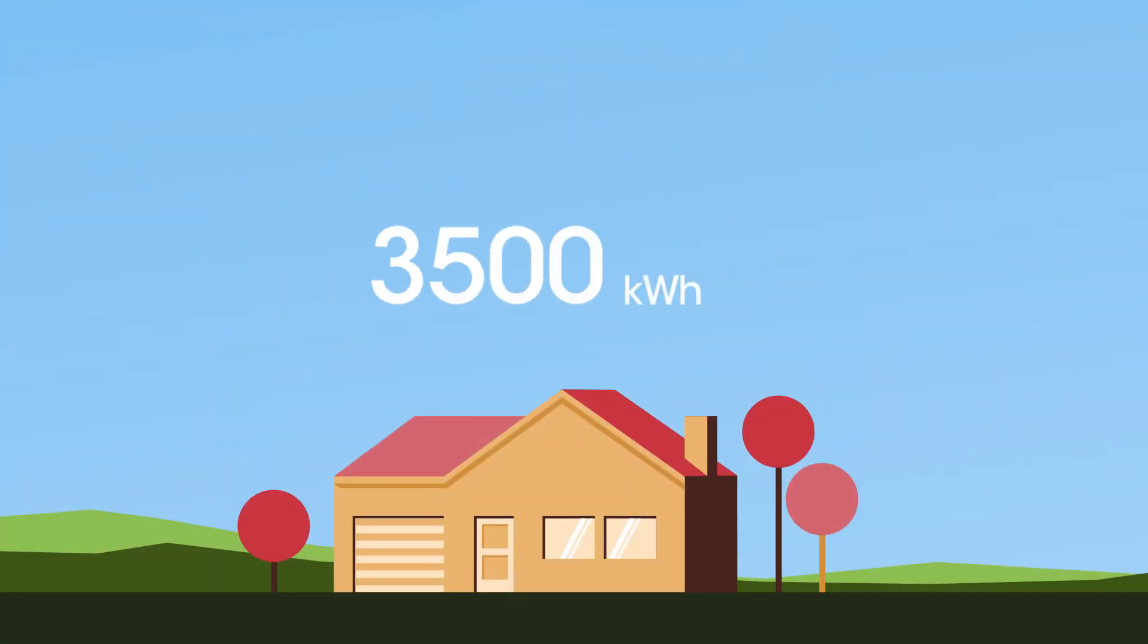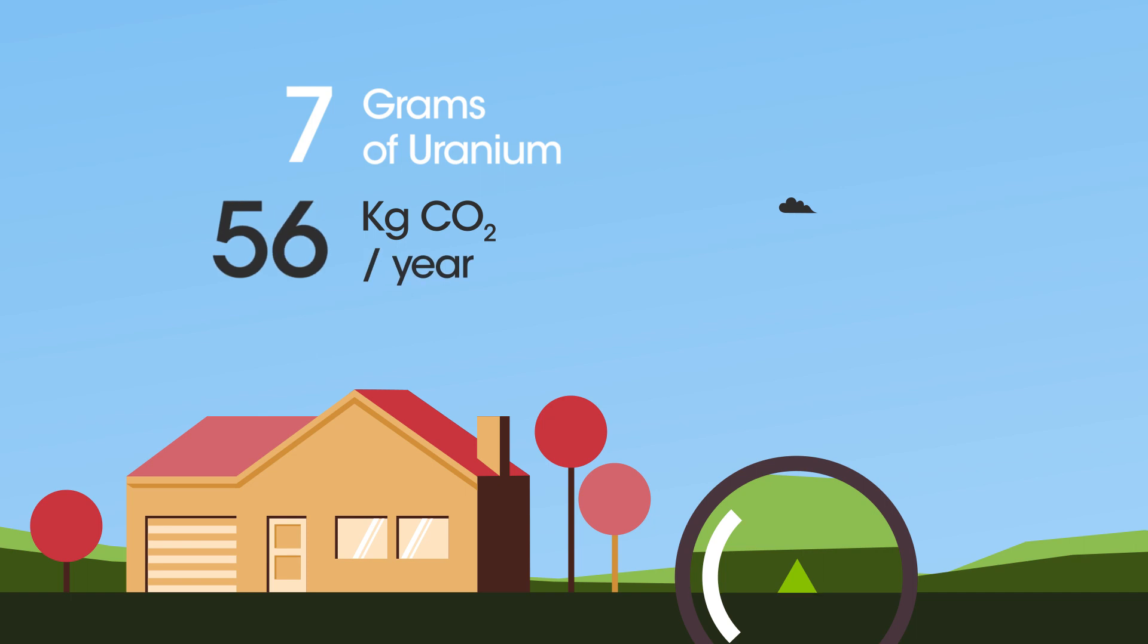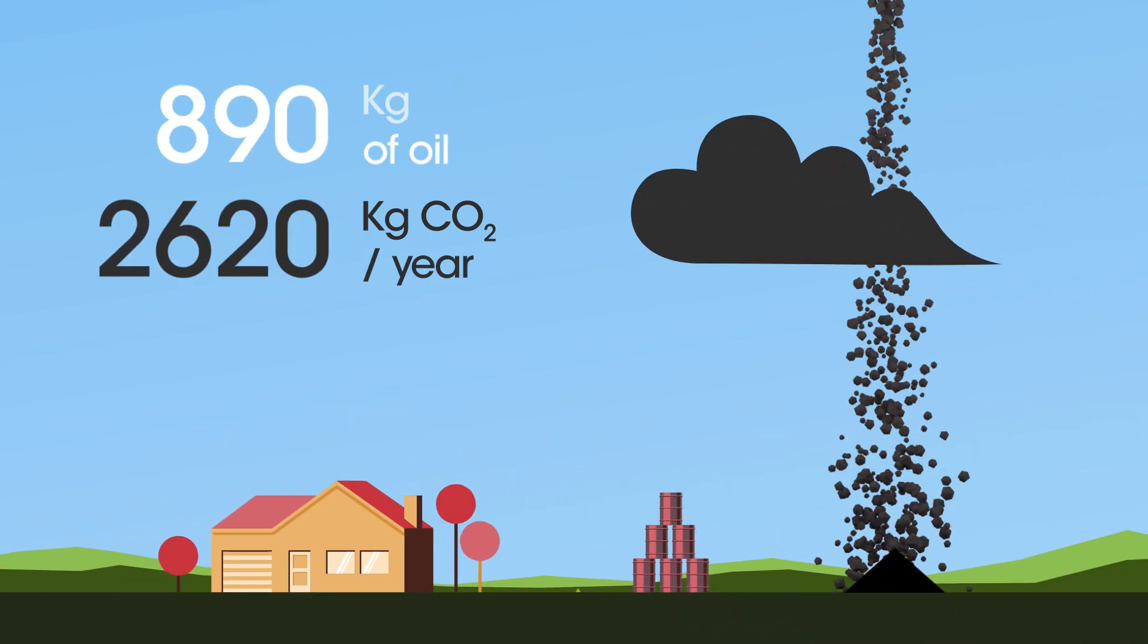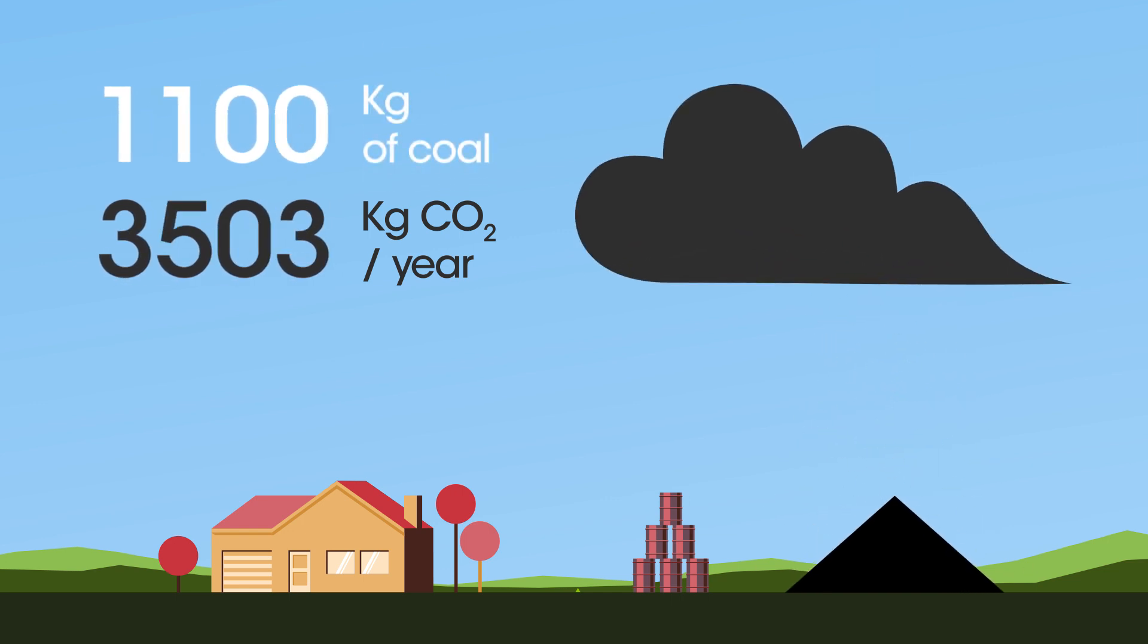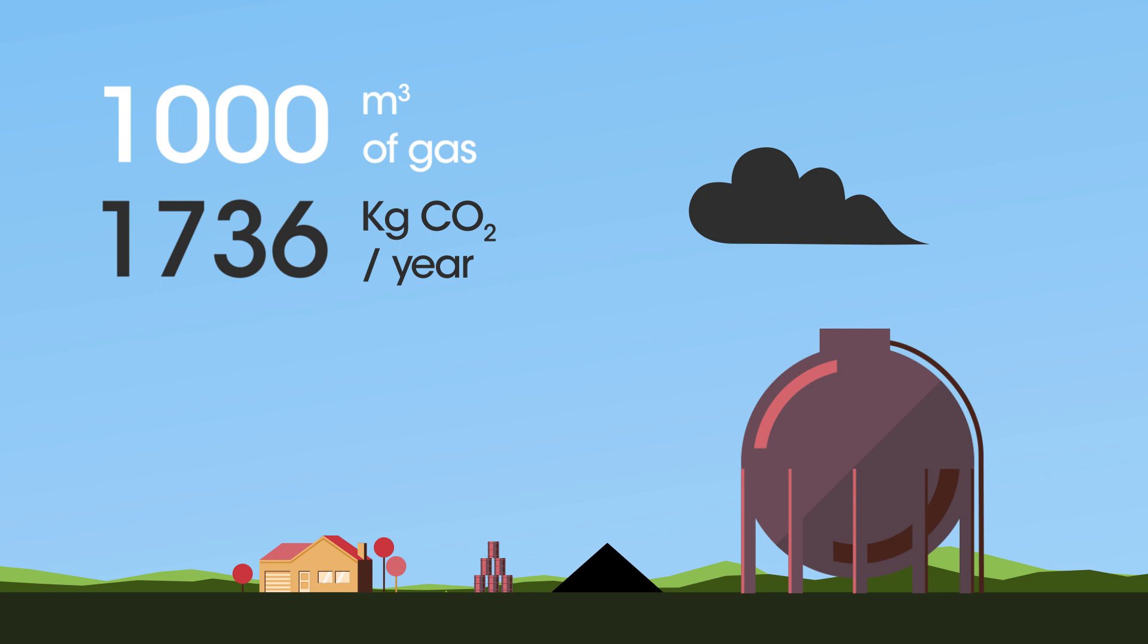To supply an average household for a year, we would need 7 grams of uranium, or 890 kilograms of oil, or 1,100 kilograms of coal, or 1,000 cubic meters of gas.